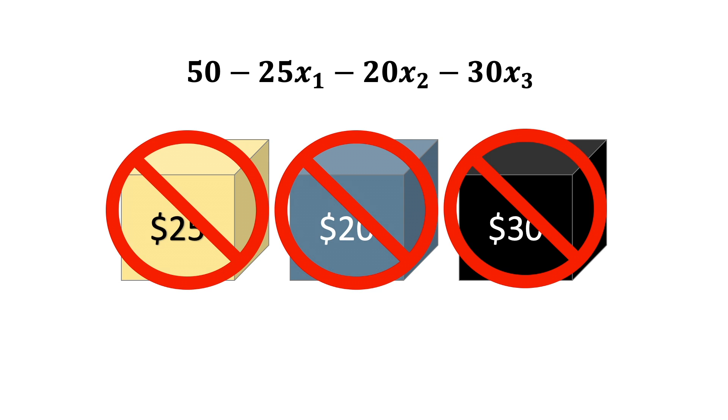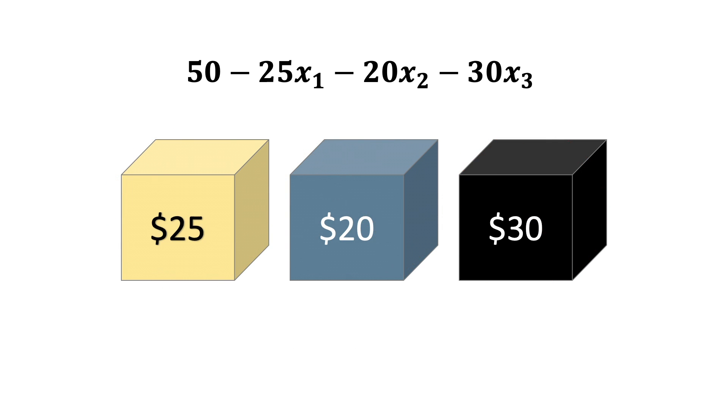In this expression, if we don't buy any boxes, the value is 50. We're $50 away from our target value of $50, so we haven't done very well. If we buy all of the boxes, the value is negative 25. We're now only $25 away from our target value, so we're doing a bit better.